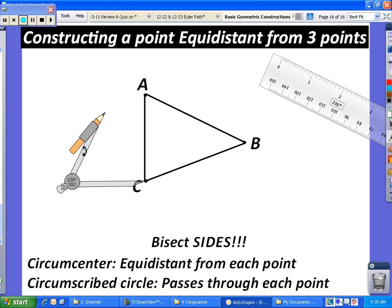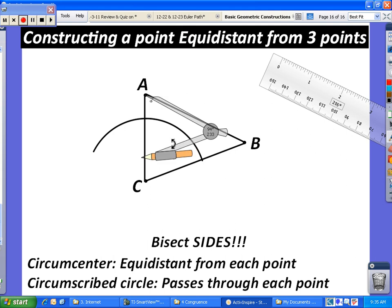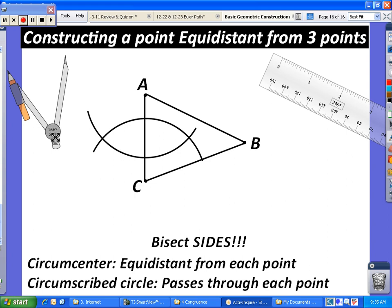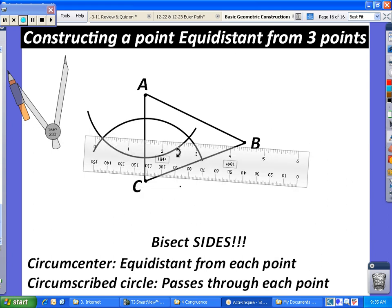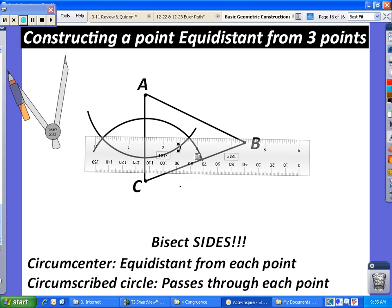So for each of the sides, you're going to open your compass a little bit more than halfway across the side of the triangle. And you are going to draw your two half circles from each of the vertices. So now I'm bisecting side A, C. Now that I have my two lines here and here,